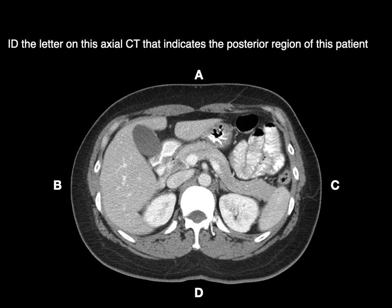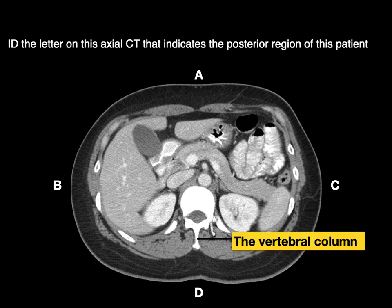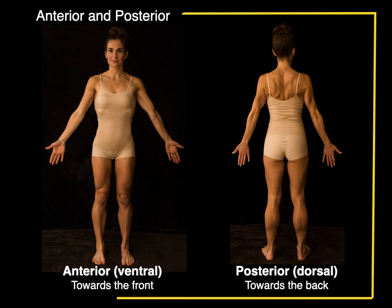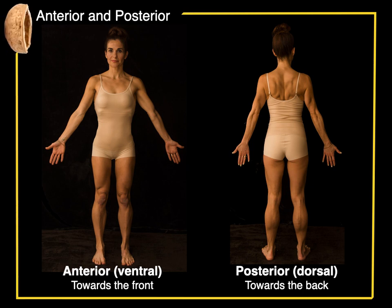Now identify the letter on this axial CT that indicates the posterior region of this patient. Let's look for something that makes a smile — that's a vertebra, the vertebral column. That makes me smile because if that's the vertebral column, it's on the posterior region of this patient, which makes D the most posterior region of this patient. And those are the terms anterior and posterior in a nutshell.